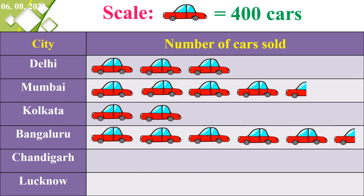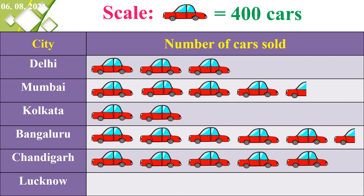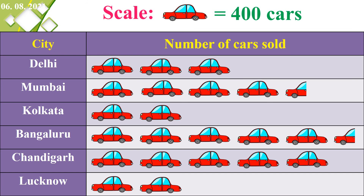Next, Chandigarh: 2,000 divided by 400 equals 5, so we draw 5 cars: 1, 2, 3, 4, and 5. For Lucknow: 1,600 divided by 400 equals 4, so we draw 4 cars: 1, 2, 3, and 4.